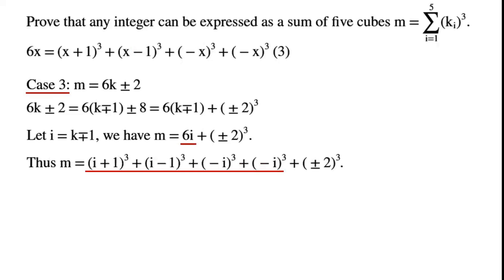Thus, m equals (i+1) cubed plus (i-1) cubed plus (-i) cubed plus (plus or minus 2) cubed. This expresses m as a sum of 5 cubes.